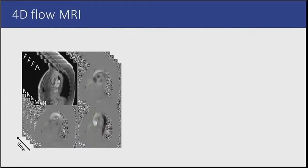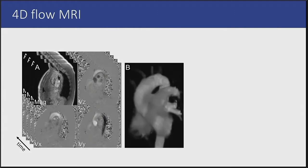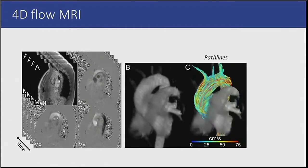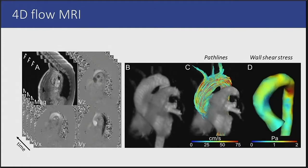For each time step, flow velocities are measured in 3 orthogonal directions, together with the magnitude image. Typically, data are acquired for about 30 time steps per cardiac cycle. After calculation of an angiogram, the blood flow can be visualized and various hemodynamic parameters can be derived, such as wall shear stress.